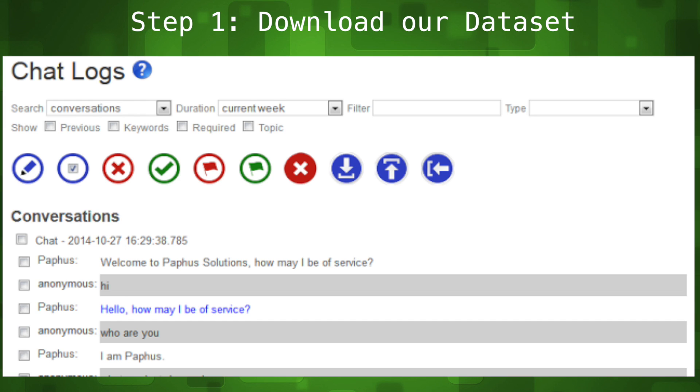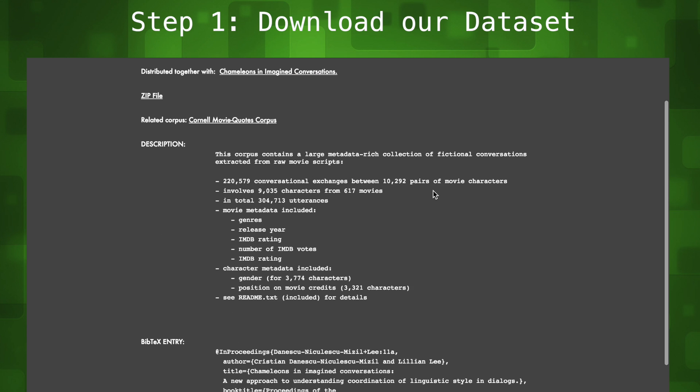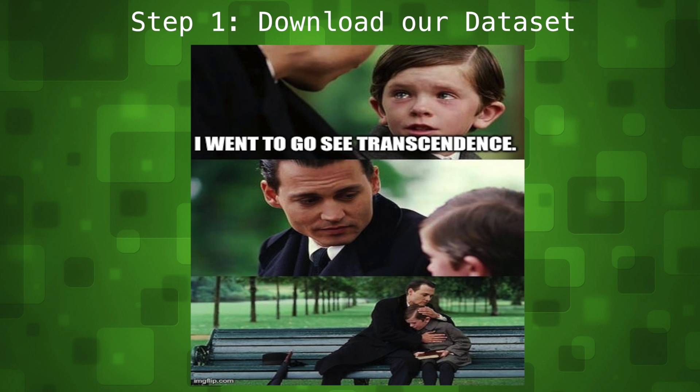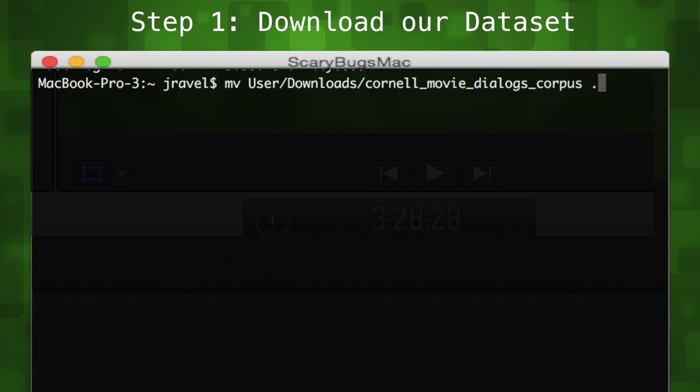If we were creating a chatbot for a specific use case like customer service, we want to use a data set of conversation logs from a real human representative. But for this demo we just want to make a fun conversational bot. So we'll use a movie dialog data set compiled by Cornell University. It contains conversations between characters from over 600 Hollywood movies. Hopefully transcendence is not included in that list. We'll download our data set and put it in our data directory.